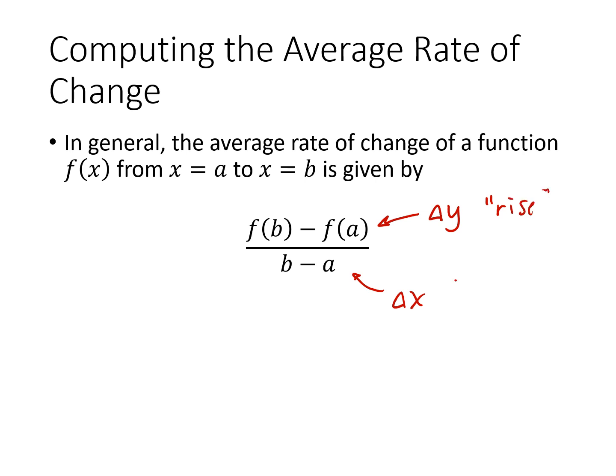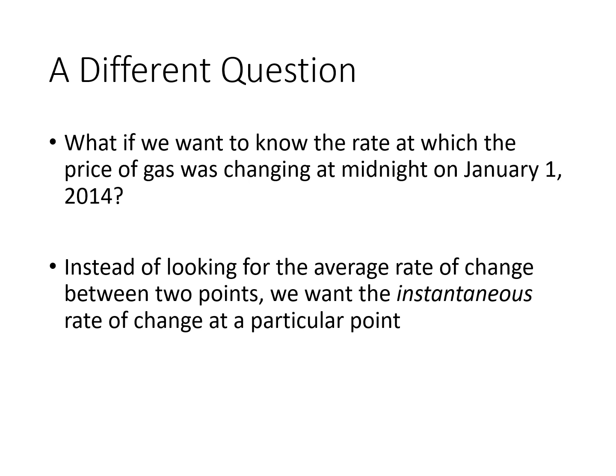So let's ask a different question. What if we want to know the rate at which the price of gas was changing at midnight on January 1st, 2014 — at a particular instantaneous moment in time? We don't have two points now. We just have one data point, and I want to know the rate at that point. This is called an instantaneous rate of change. The problem here is that we can't use that slope formula because we need a change in y and a change in x. If we only have a single y and a single x, then we don't have another point to compare that to. So this presents a problem.